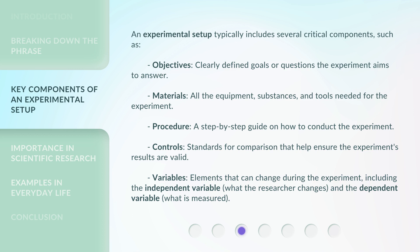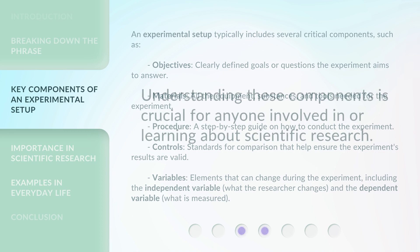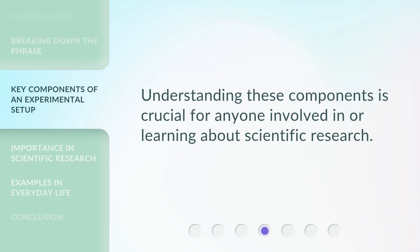Additional components include controls — standards for comparison that help ensure the experiment's results are valid — and variables, elements that can change during the experiment, including the independent variable, what the researcher changes, and the dependent variable, what is measured. Understanding these components is crucial for anyone involved in or learning about scientific research.